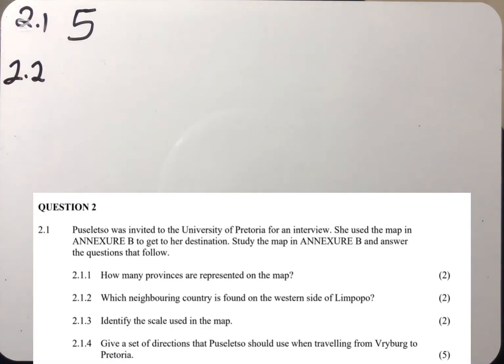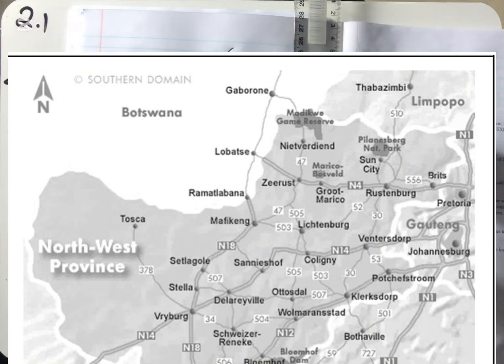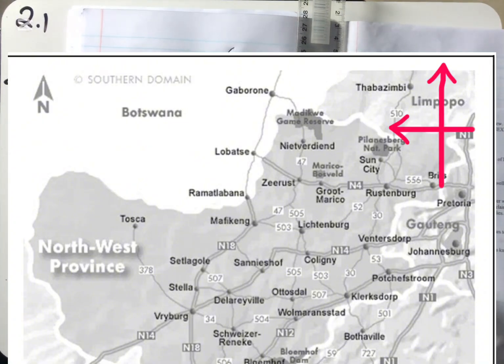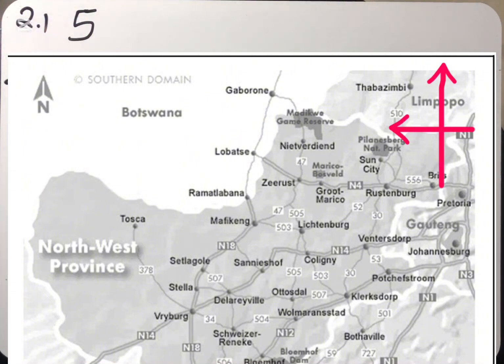Question 2.2: Which neighboring country is found on the western side of Limpopo? So what we need to do, we go and locate Limpopo. This is Limpopo up here. So here at Limpopo we must draw what we call a compass direction, imaginary compass direction. Obviously we're going to follow this direction here because they've showed us that north is pointing upward. We're gonna have north, south, east and west.